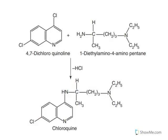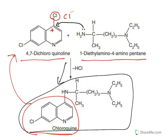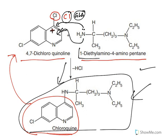For the synthesis of chloroquine, two starting materials are used: 4,7-dichloroquinoline and dimethylamino-4-aminopentane. Chlorine is a very good leaving group — it leaves with its electrons, generating a positive charge on the ring. The electrons on the amine then attack this electrophilic position, resulting in bond formation and yielding chloroquine. This is a very simple two-step synthesis — understanding the organic chemistry of nucleophilic aromatic substitution is key.